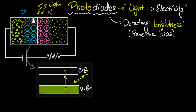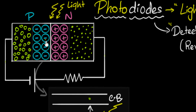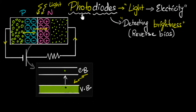But when an electron-hole pair forms in the depletion region, before they have a chance to recombine, the electron gets attracted by the positive charge and repelled by the negative, accelerating in one direction. The hole similarly gets accelerated in the opposite direction. As a result, we now have a current — holes moving one way and electrons moving the other way give us a current in this circuit due to the electron-hole pairs generated by the light.